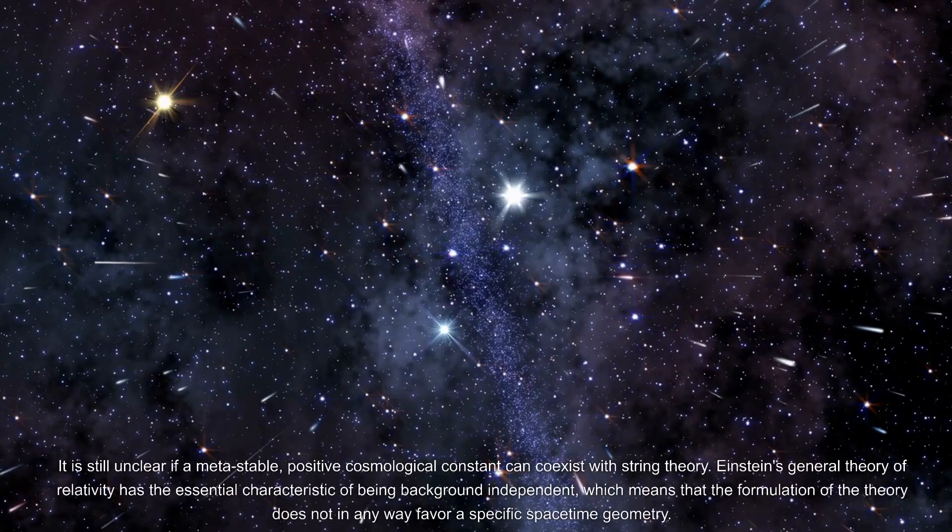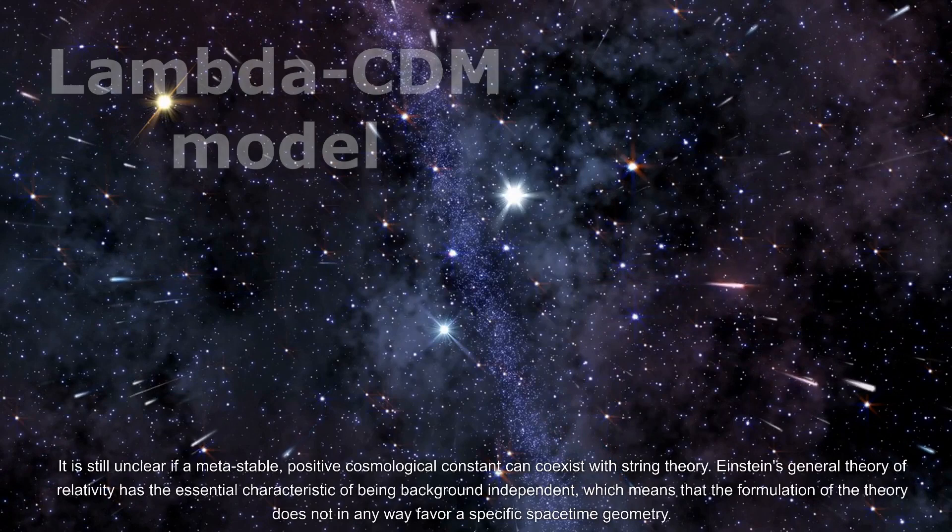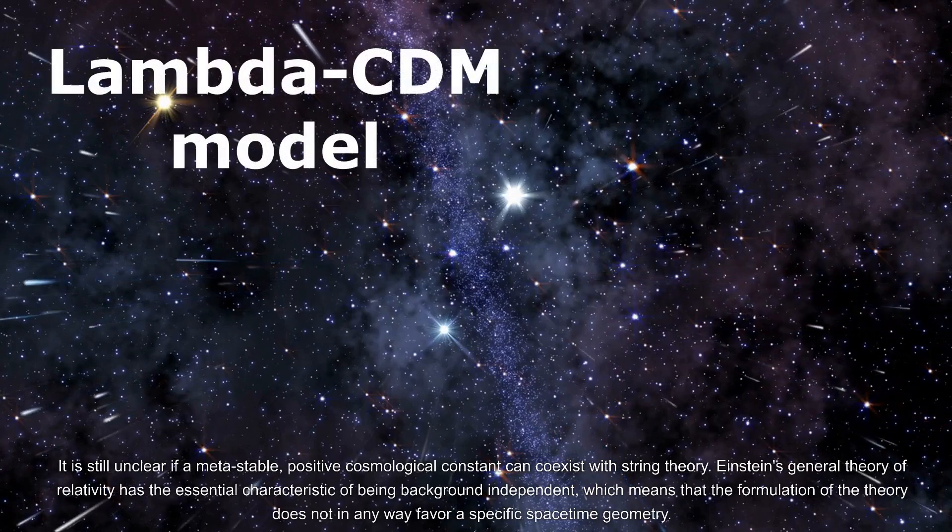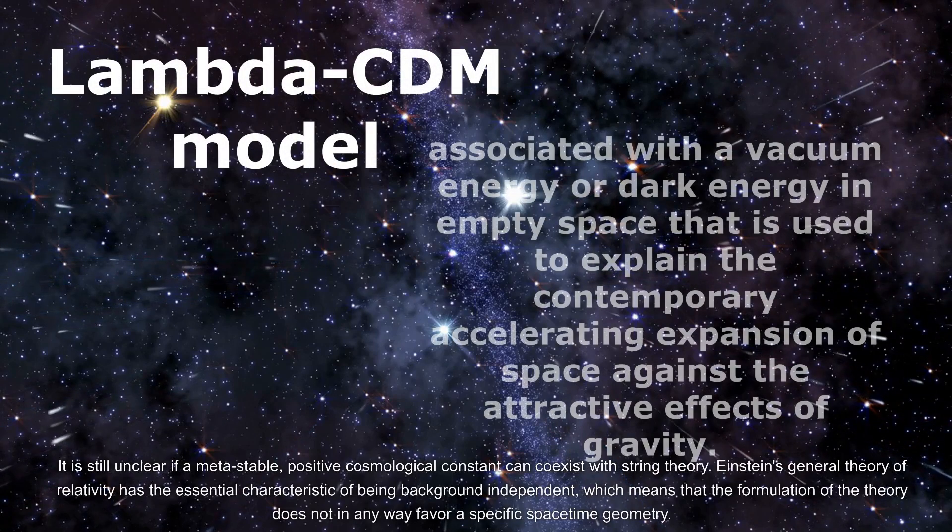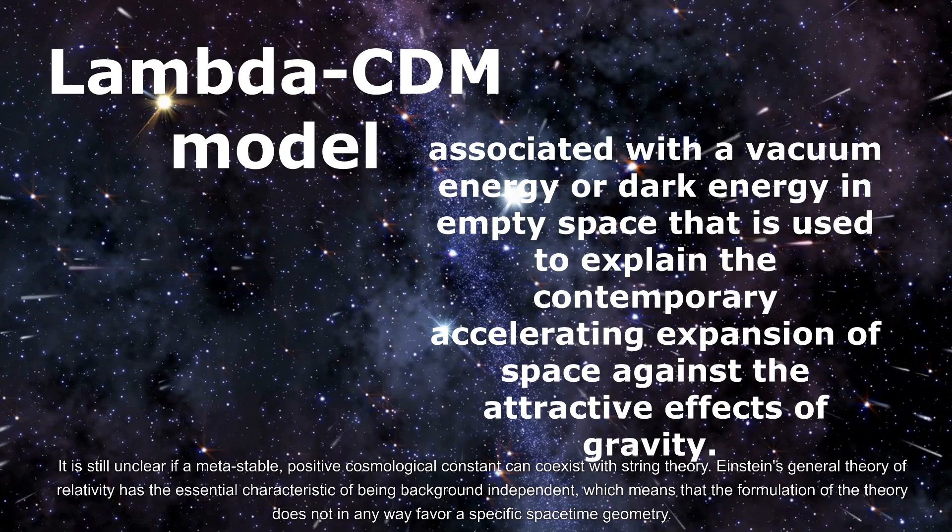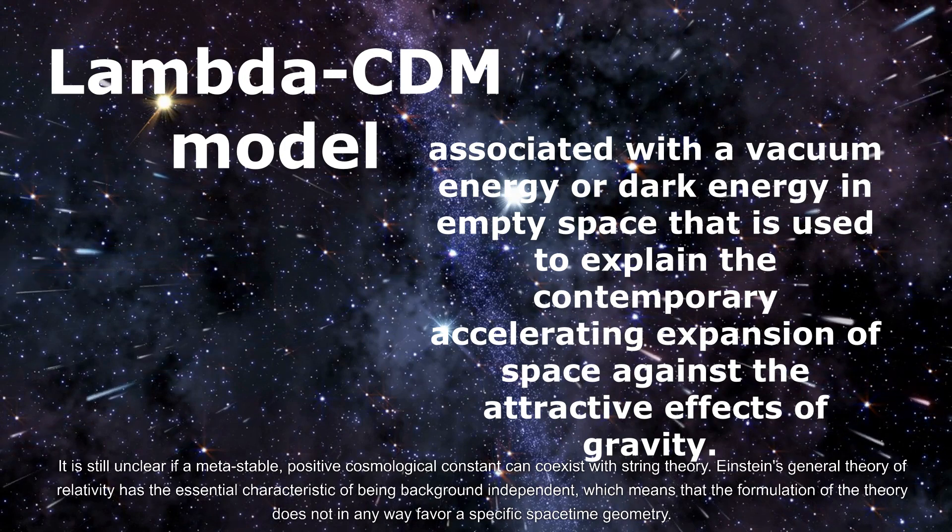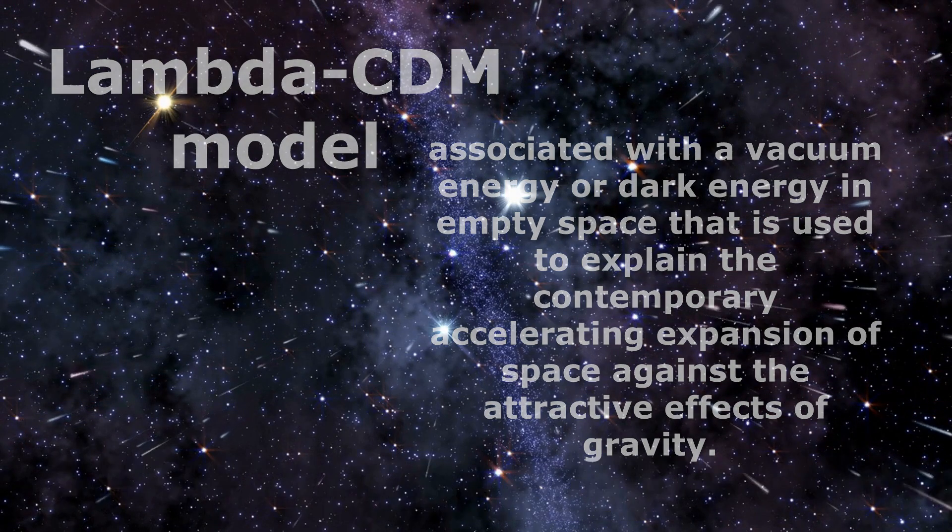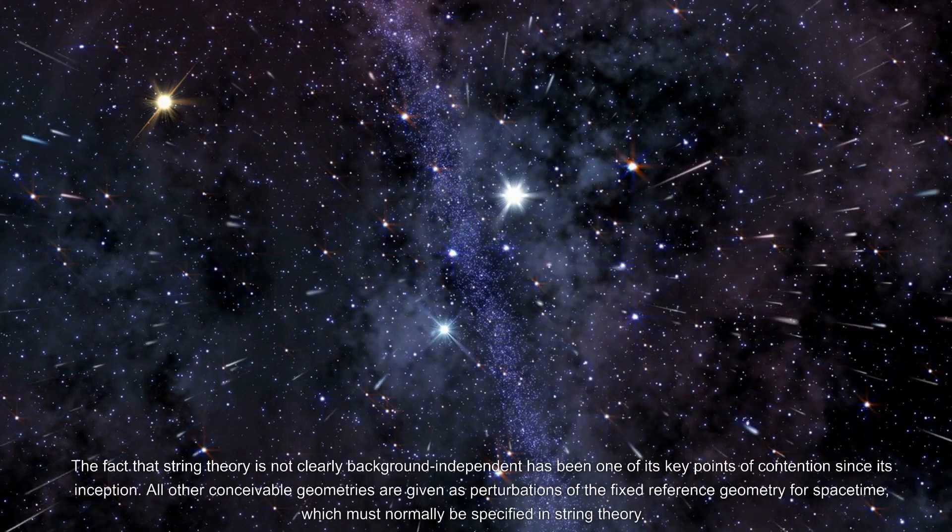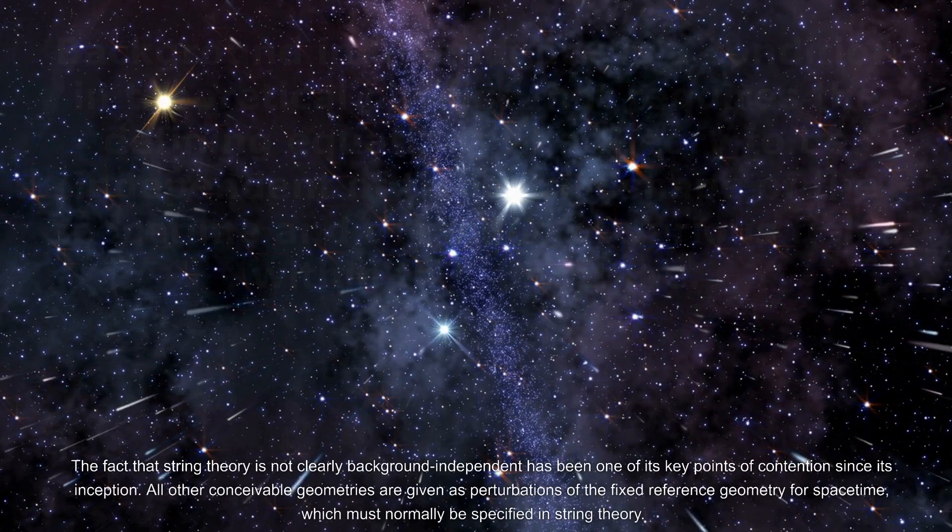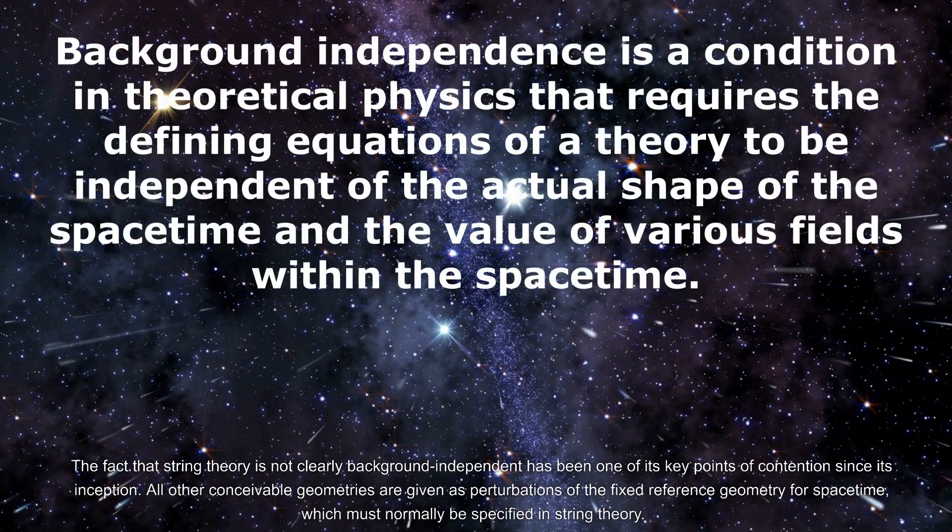It is still unclear if a metastable positive cosmological constant can coexist with string theory. Einstein's general theory of relativity has the essential characteristic of being background independent, which means that the formulation of the theory does not in any way favor a specific space-time geometry. The fact that string theory is not clearly background independent has been one of its key points of contention since its inception.